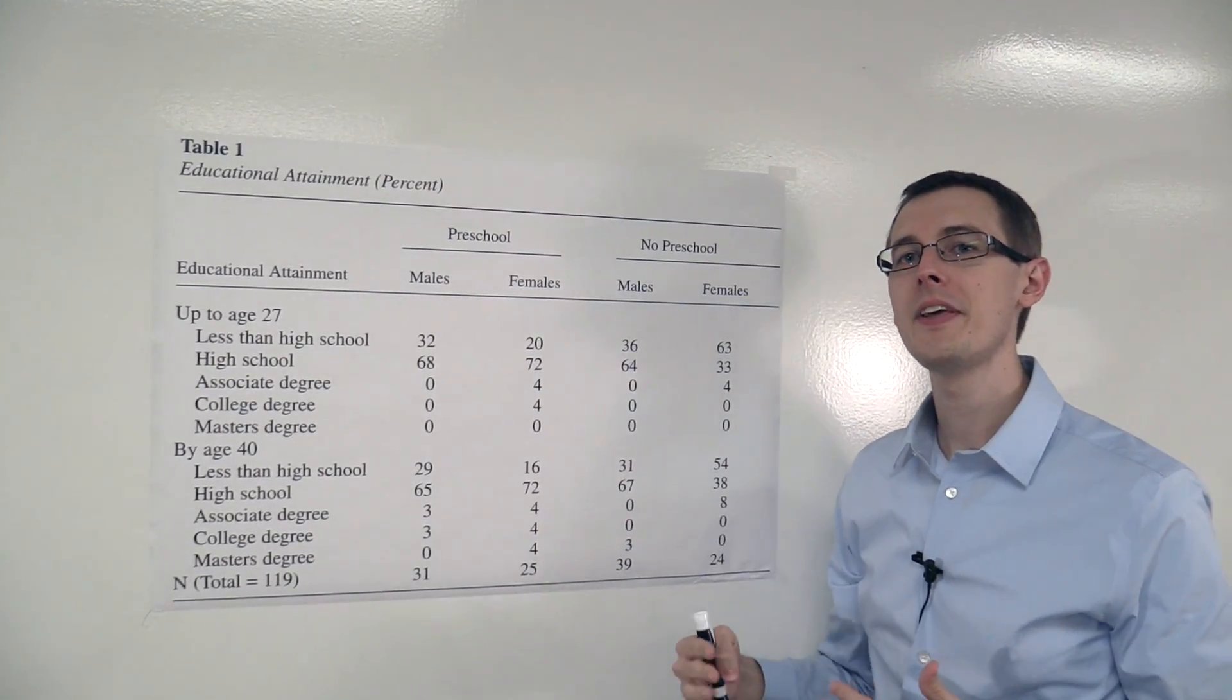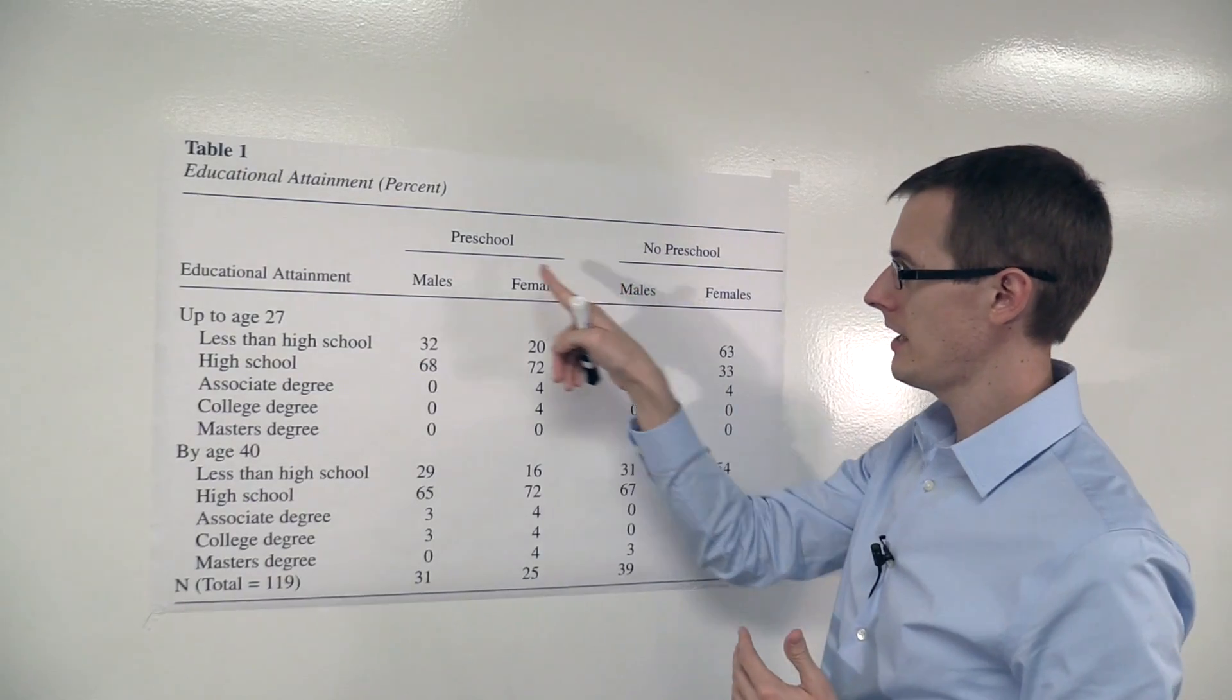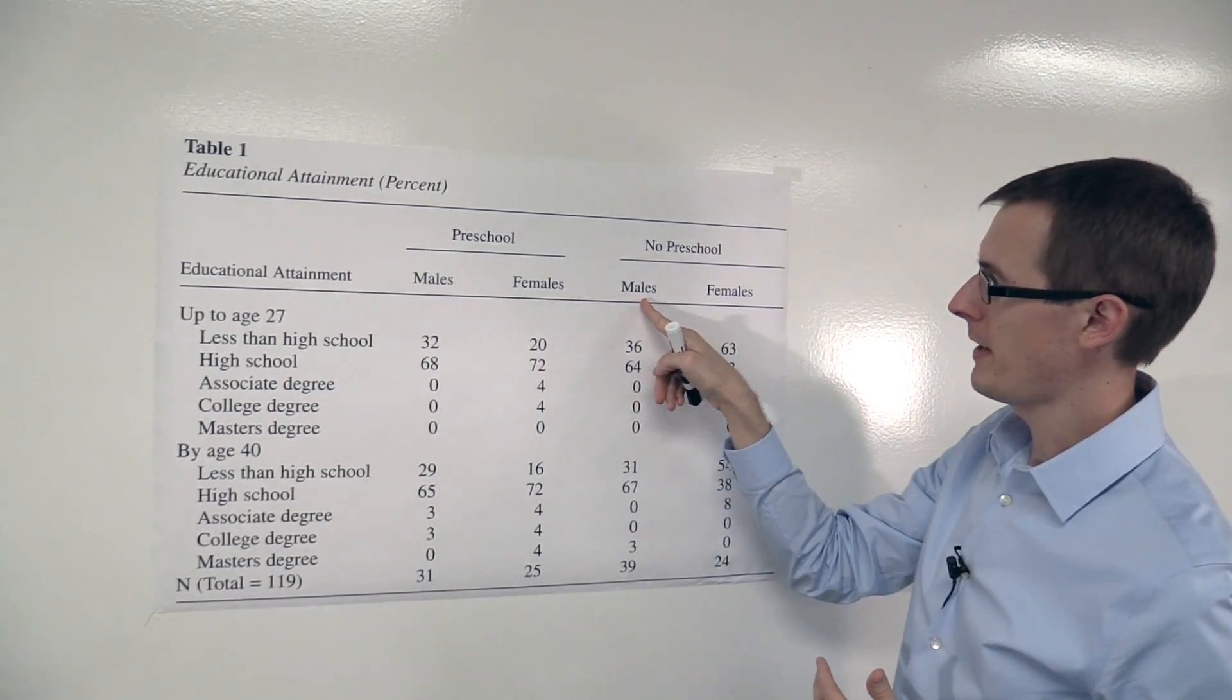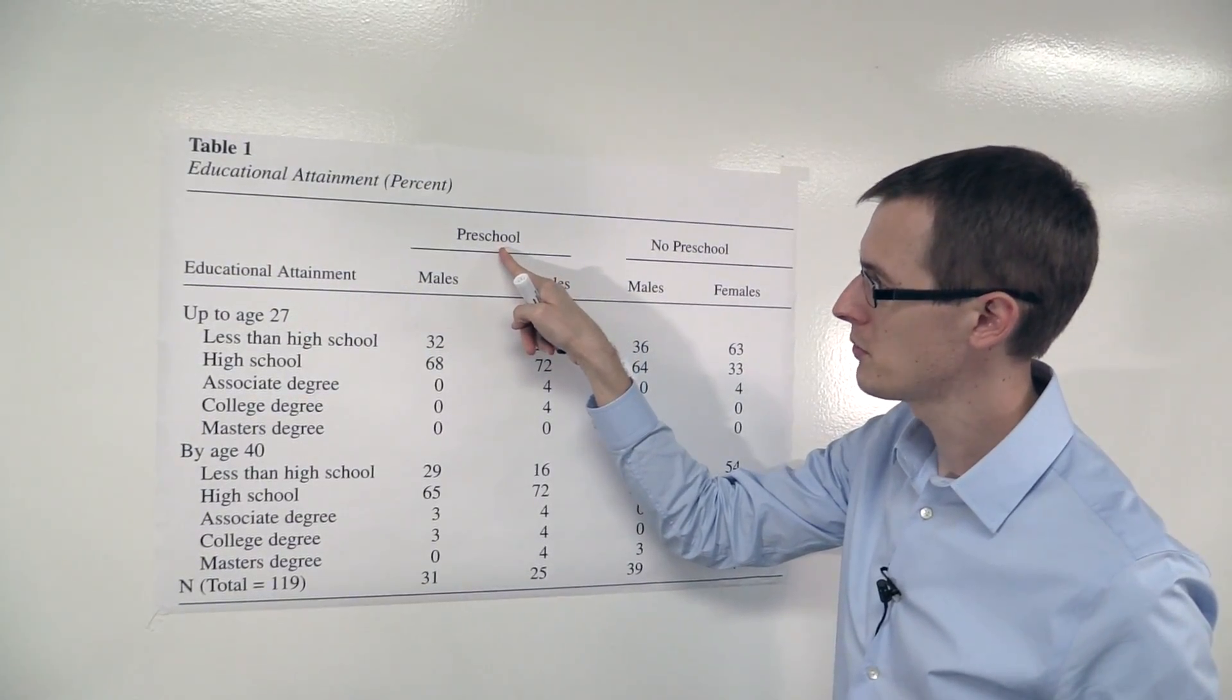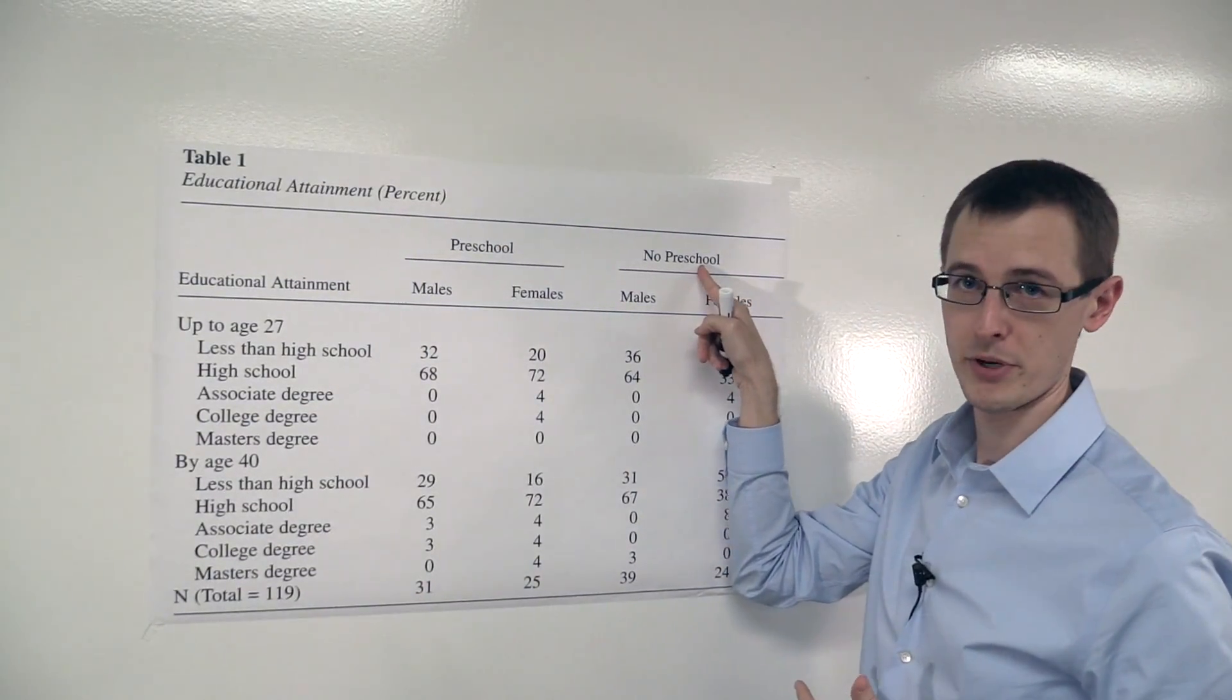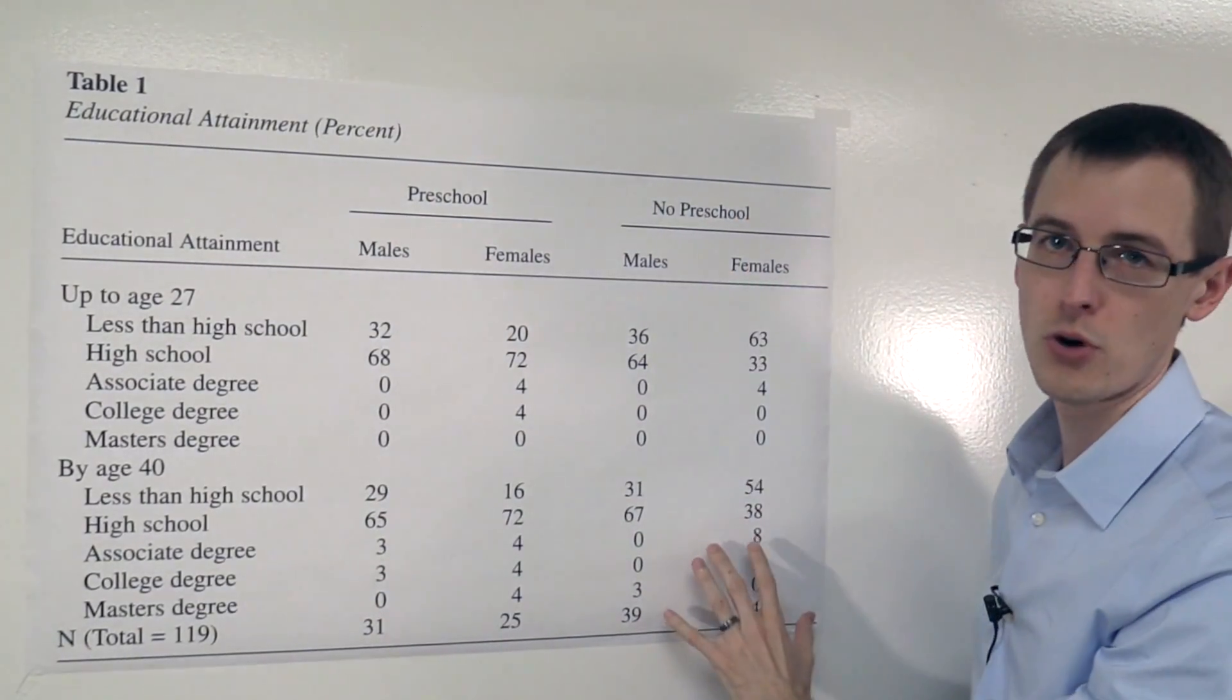So they're going to split the analysis by gender. Here we're going to list males in preschool versus males who didn't get preschool, and then we're going to have females who got preschool and females who didn't get preschool. So this is the treatment group here, this is the control group.